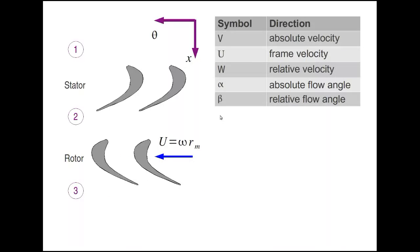If we go back to the cascade view and now start thinking about angles and relative and absolute velocities, we have the symbols we use in the course here. We have V for absolute velocity, U for the frame velocity (that's the velocity of any metal in the system), and W which is our relative velocity (that's any velocity observed whilst sitting on the metal that's whizzing round). We have alpha for absolute flow angle and beta for relative flow angle.